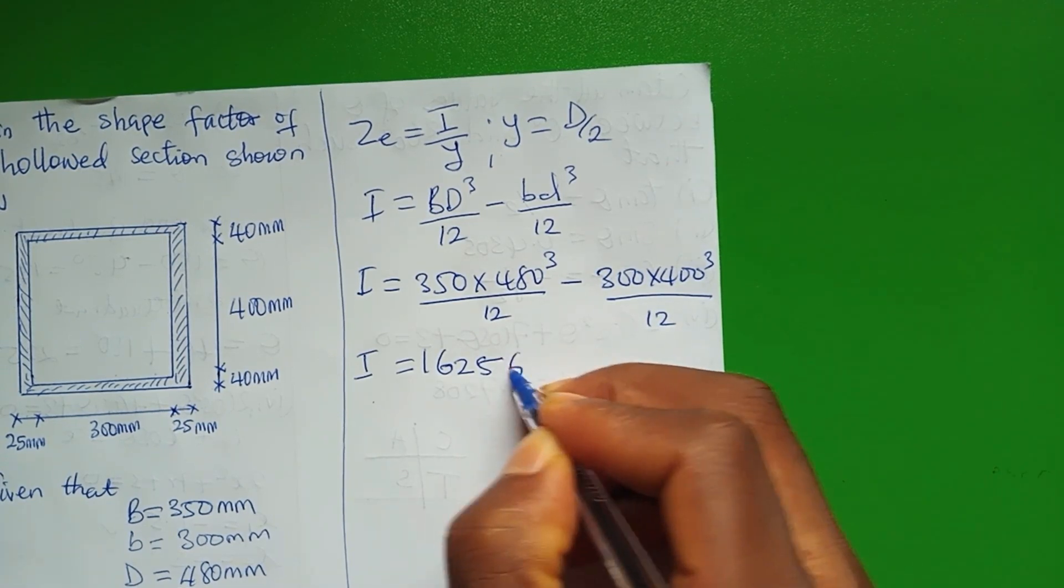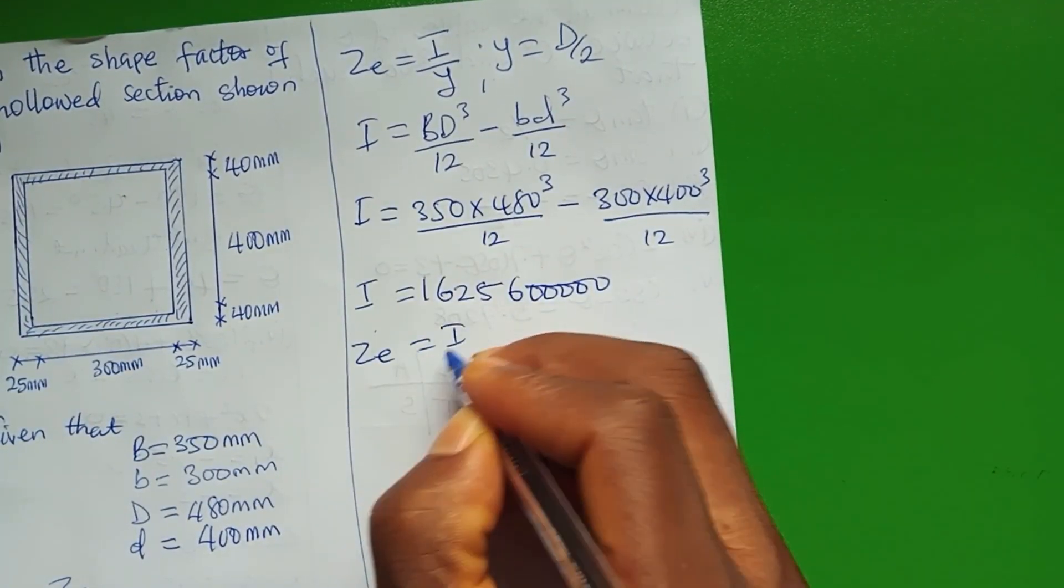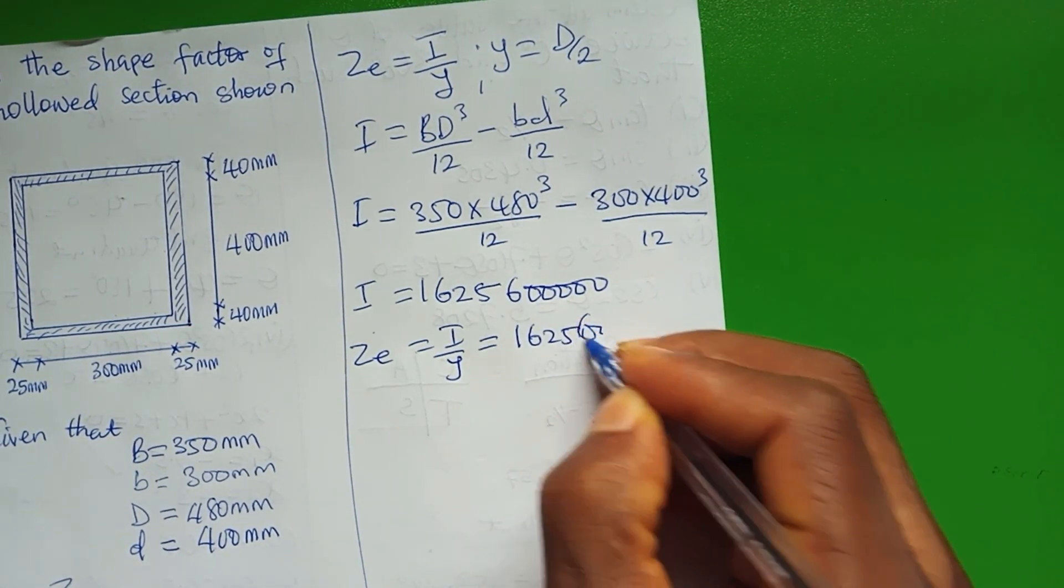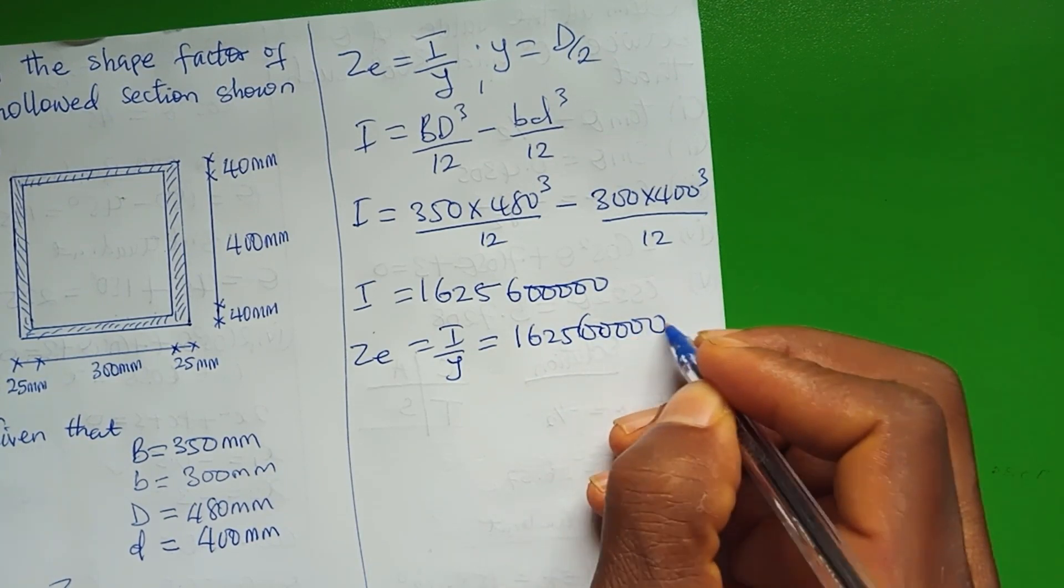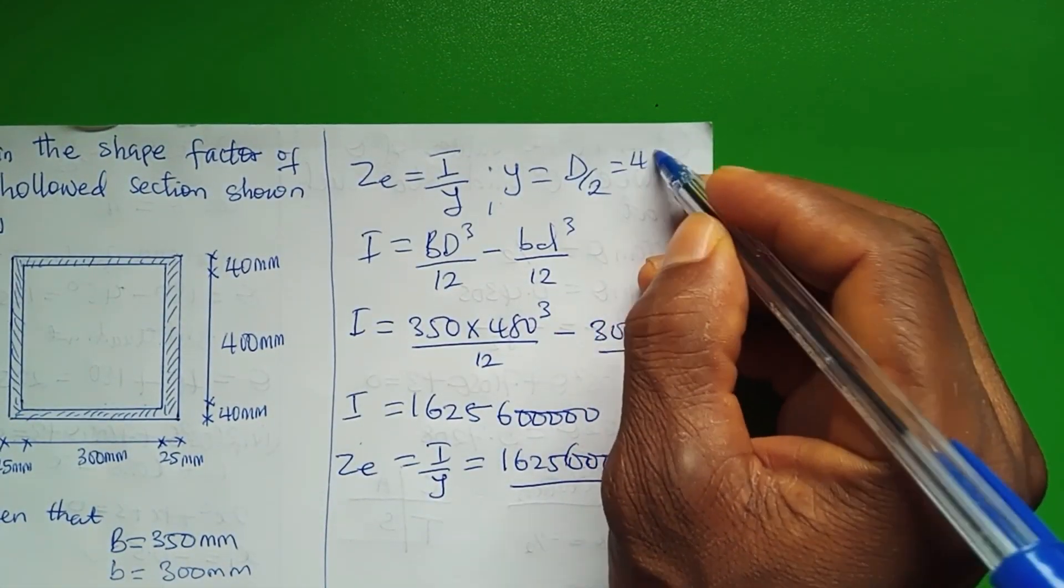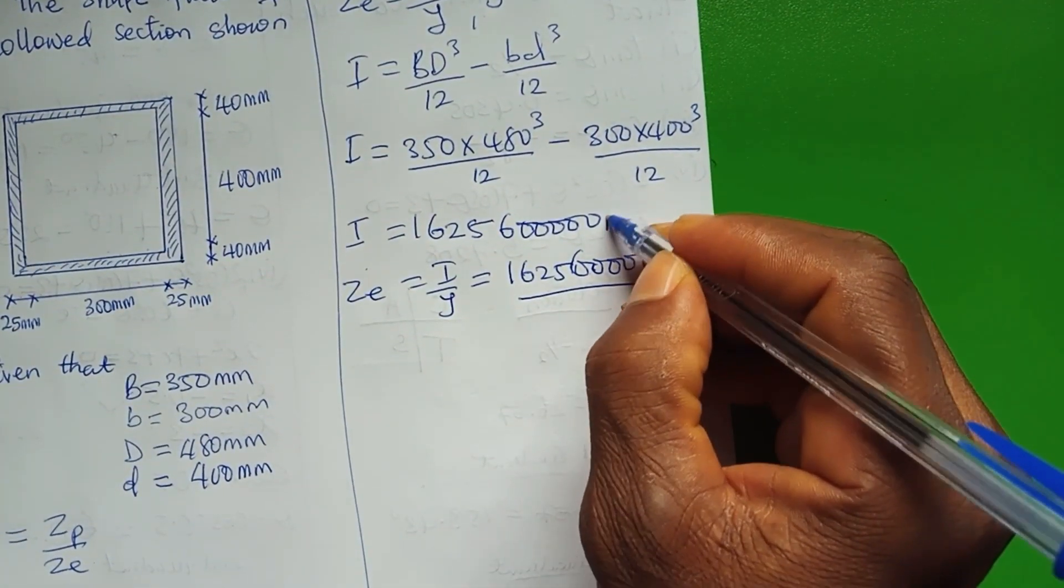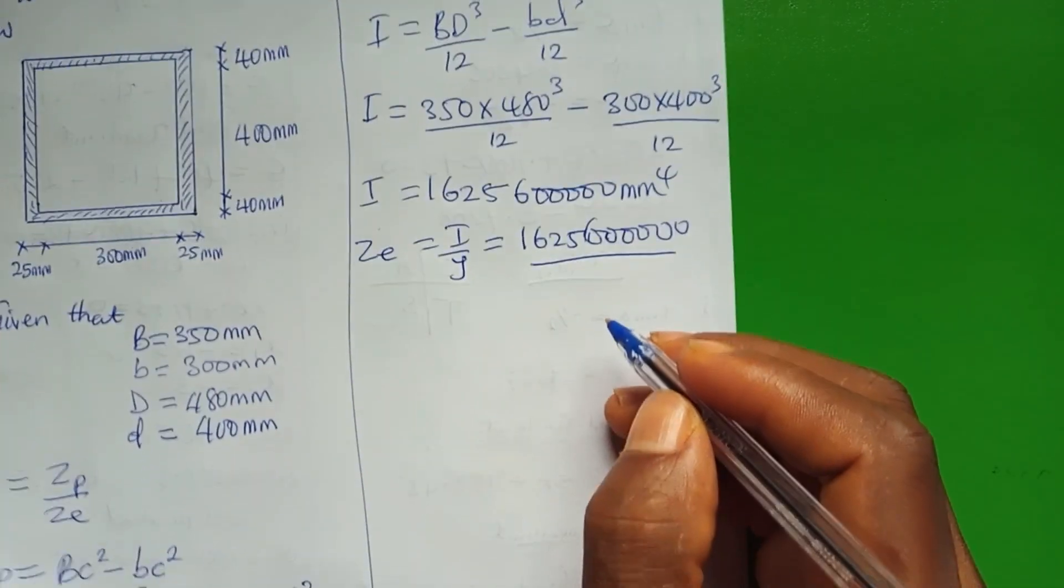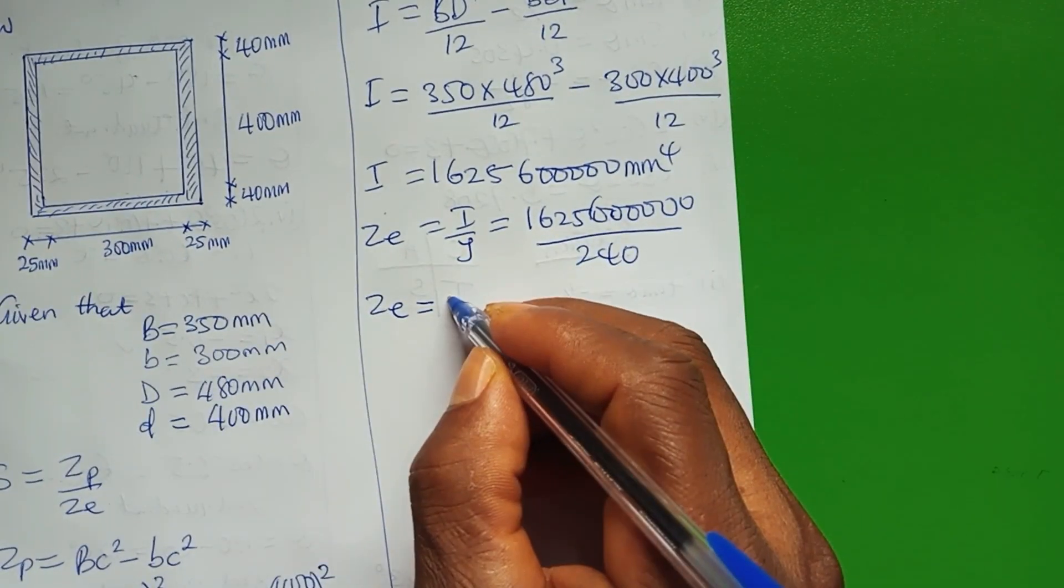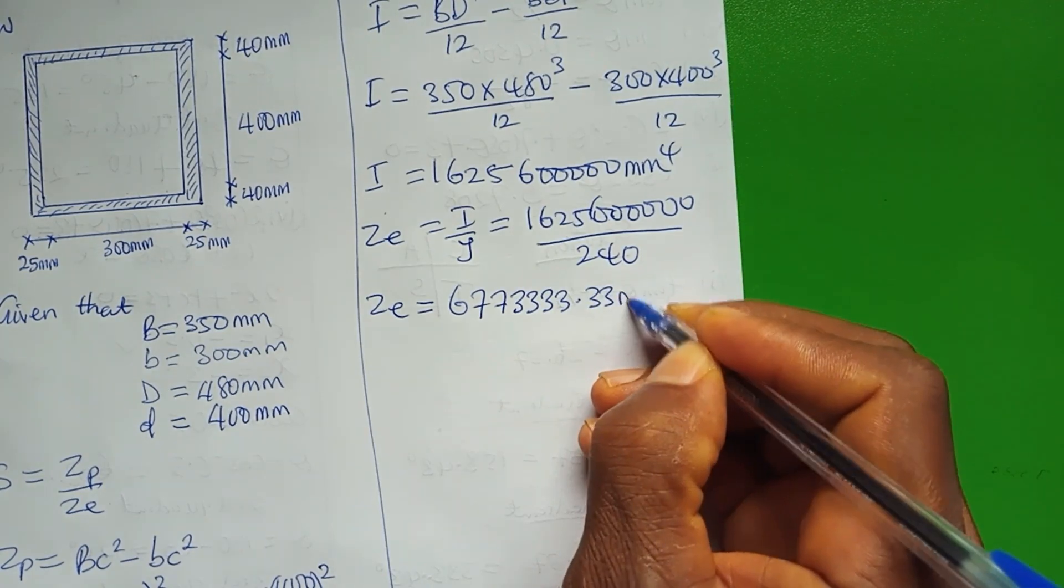I will be equal to 1,625,600,000 millimeters to the fifth. Ze is equal to I over y, that would be 1,625,600,000 over d over 2, which is 480 over 2, which is 240 millimeters. Ze is equal to 6,773,333.33 millimeters cubed.